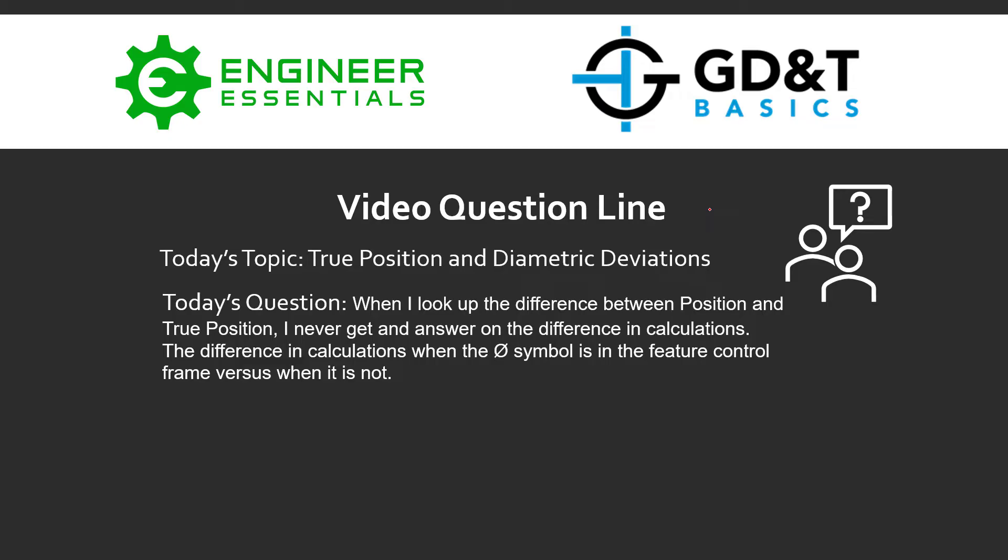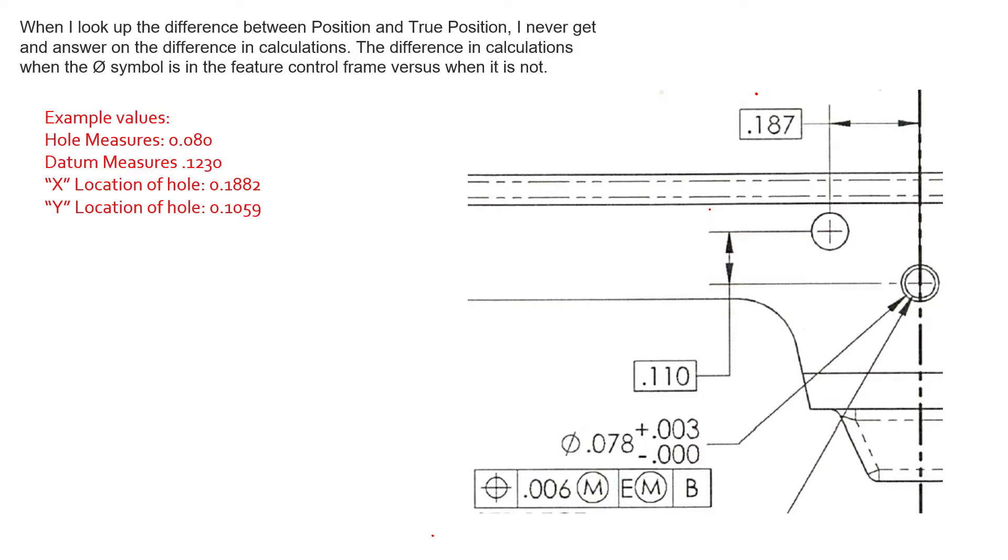The short answer is when the diameter symbol is not there, it's more than likely just a typo. Let's take a look at the sample drawing here.